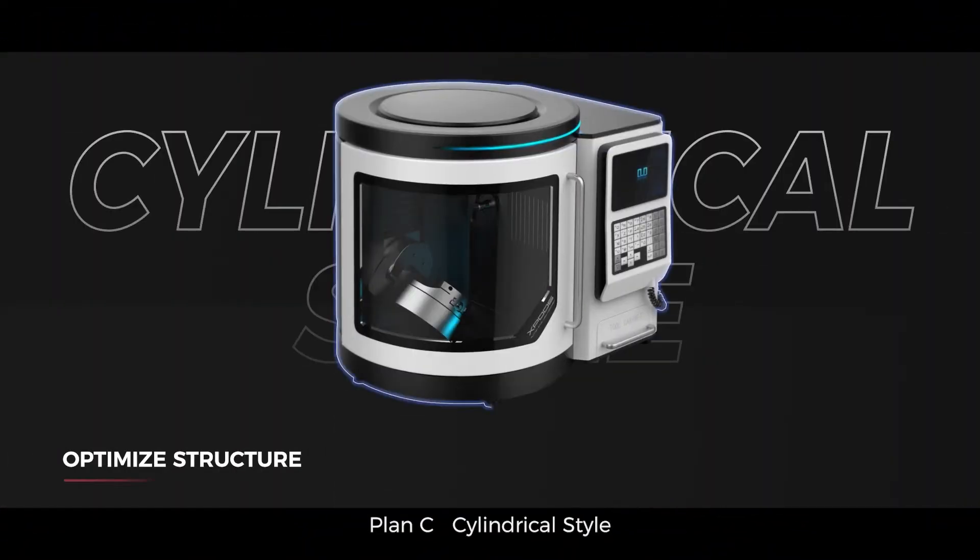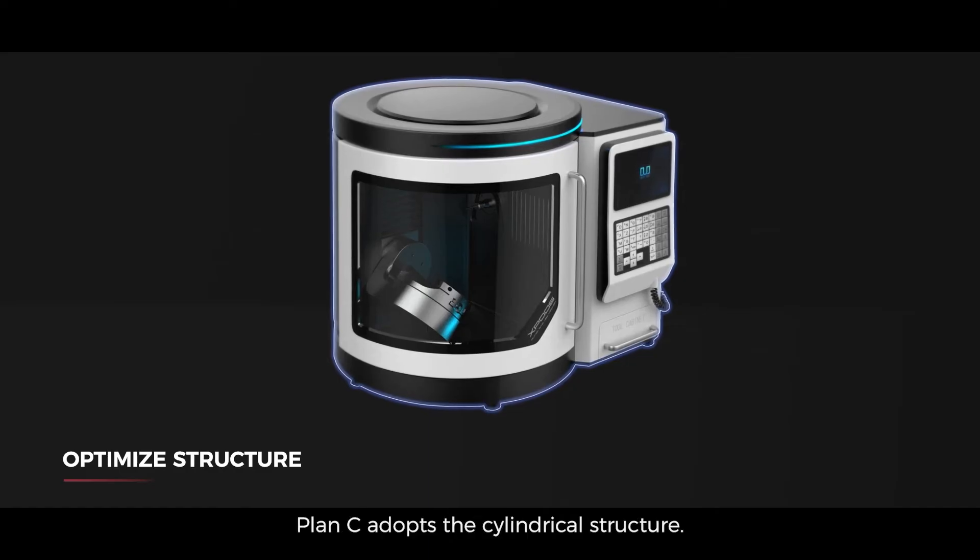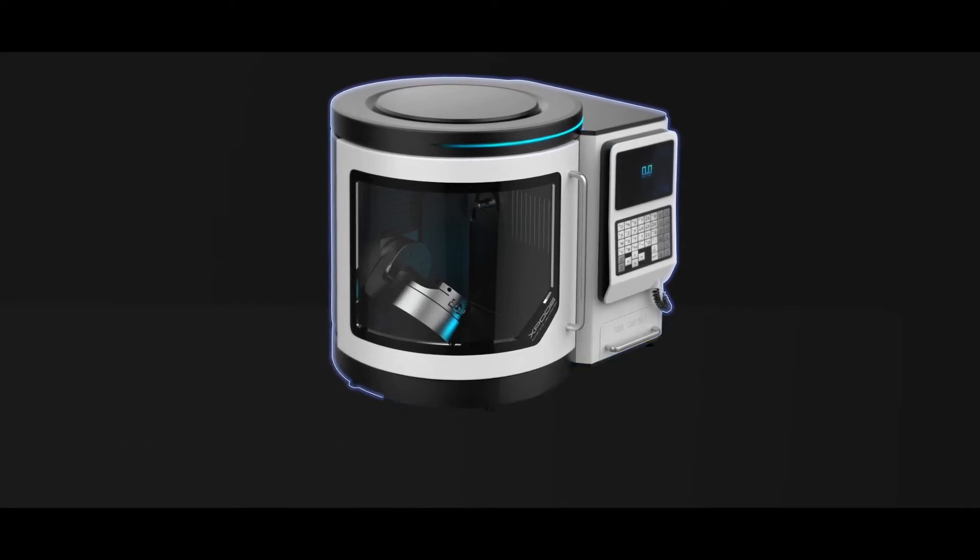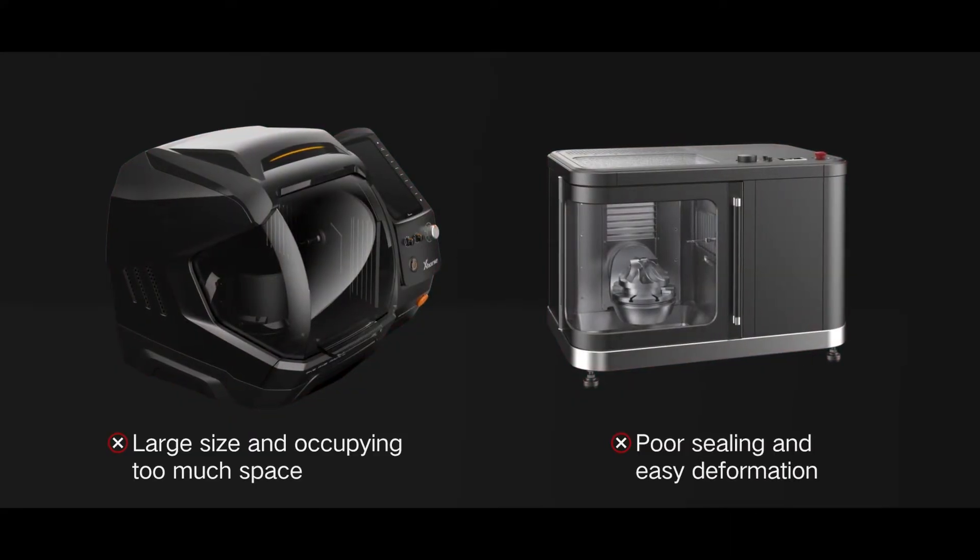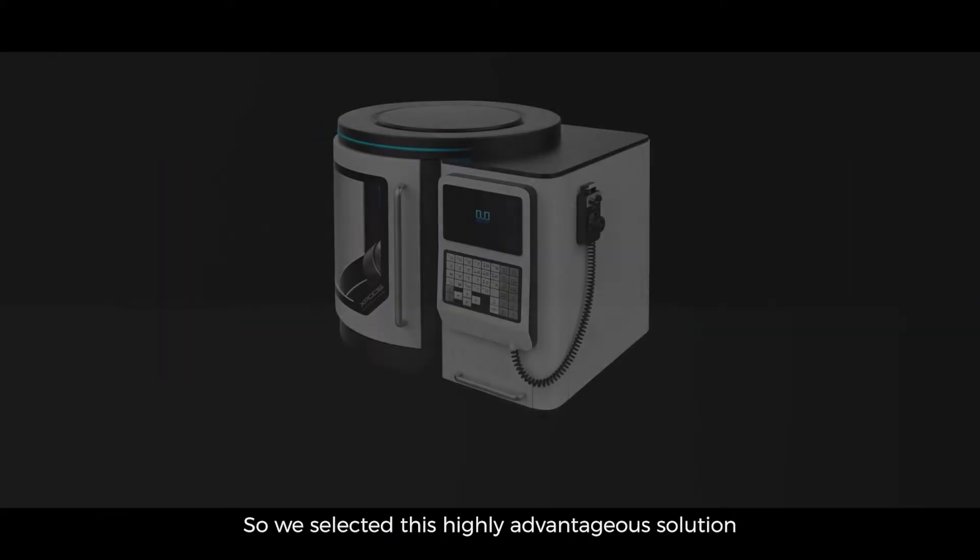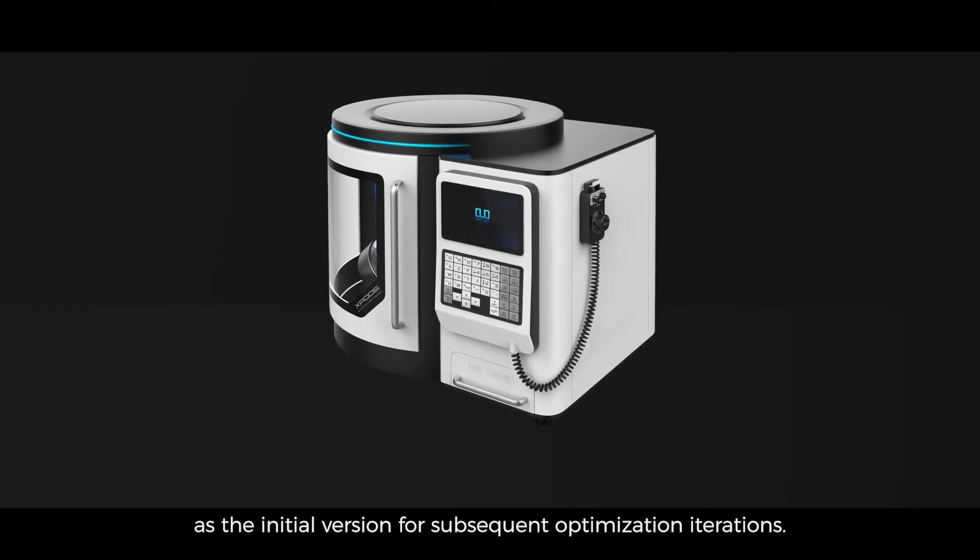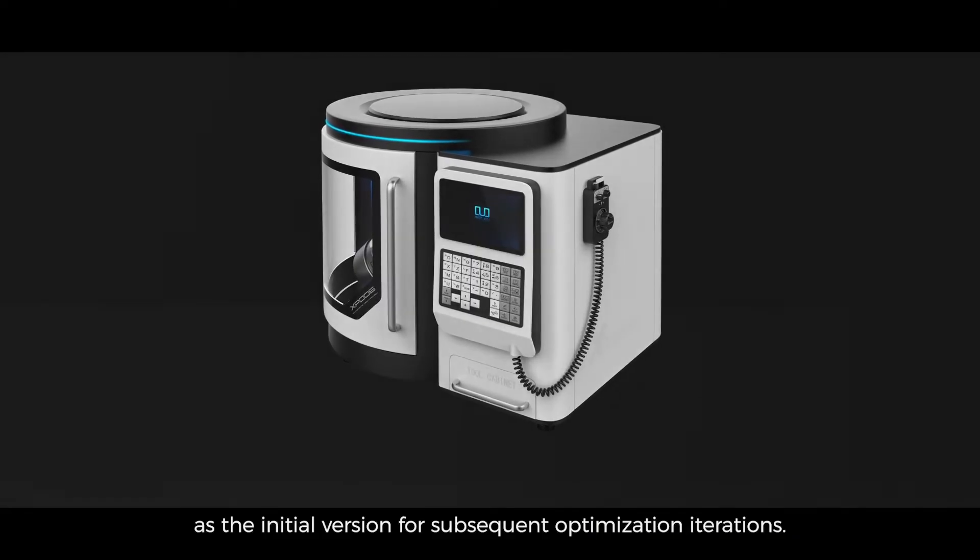Plan C, Cylindrical Style. Plan C adopts the cylindrical structure. This plan has solved the problems existing in Plan A and Plan B, so we selected this highly advantageous solution as the initial version for subsequent optimization iterations.